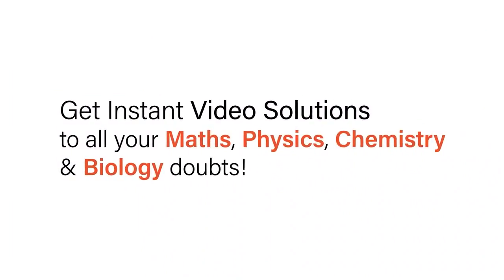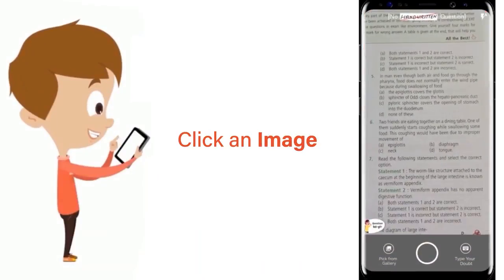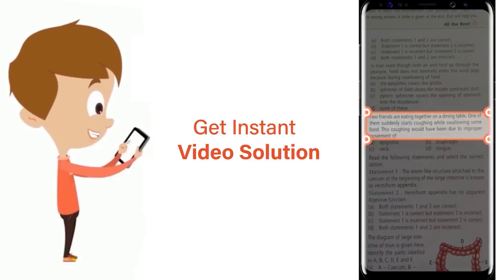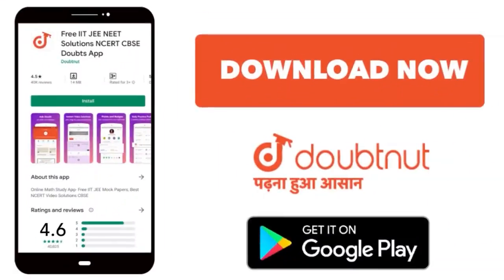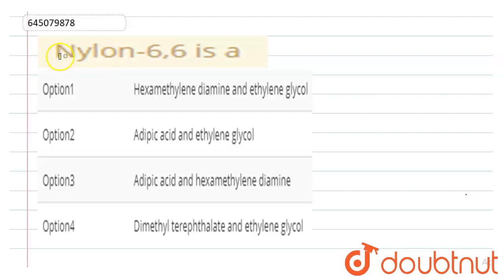With Doubtnut, get instant video solutions to all your math, physics, chemistry, and biology doubts. Just click the image of the question, crop the question, and get an instant video solution. Download Doubtnut app today. The question is: Nylon-6,6 is a... So we have given these options.